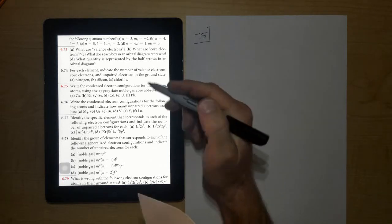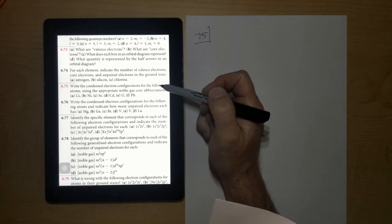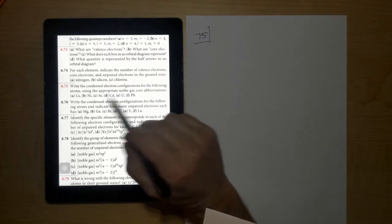Okay, so this is number 75 from Chapter 6. It says write the condensed electron configuration for the following atoms using appropriate noble gas core abbreviations.